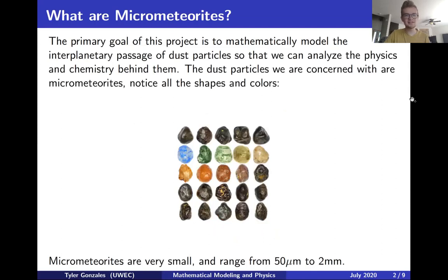The primary goal of this project is to develop a mathematical and physical model that will analyze the interplanetary passage of dust particles, these little tiny meteorites, so that we can hopefully look at more of the physics and chemistry behind them.